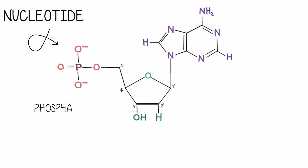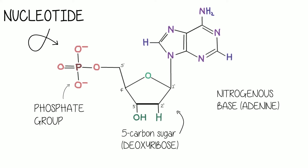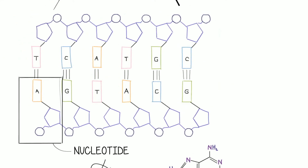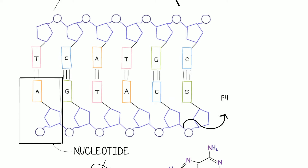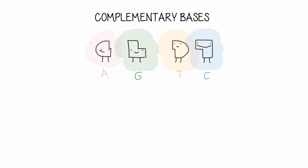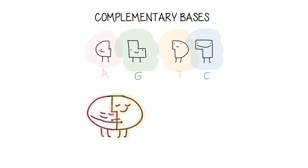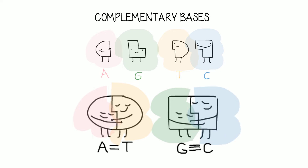The four nitrogenous bases are adenine, guanine, cytosine, and thymine. Covalent bonds join the sugar-phosphate backbone, and the bases are paired to their complementary bases through hydrogen bonds. Complementary base pairing means that every adenine can only bond with thymine, and every guanine can only bond with cytosine.